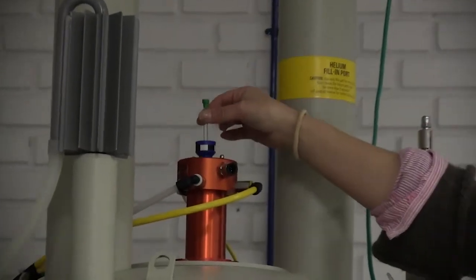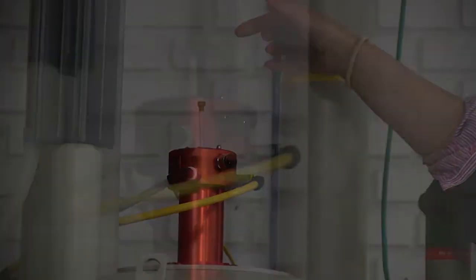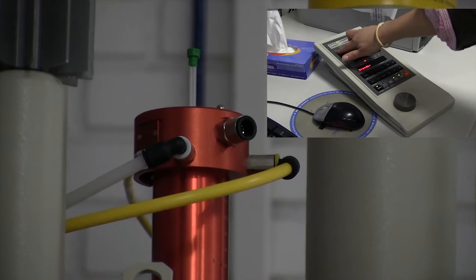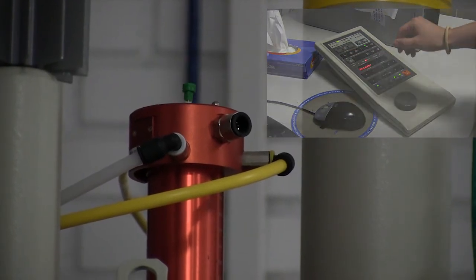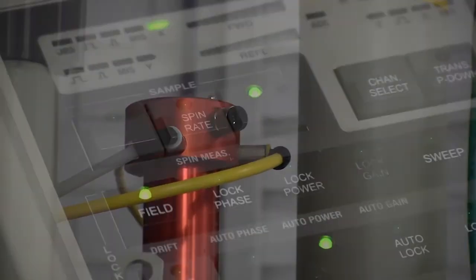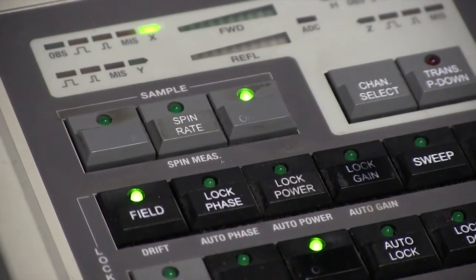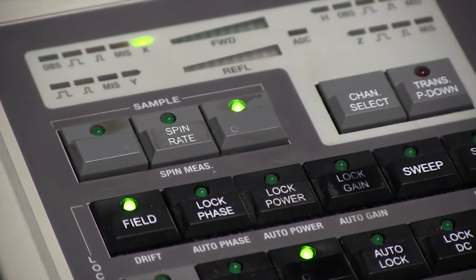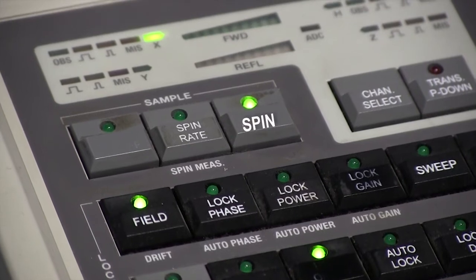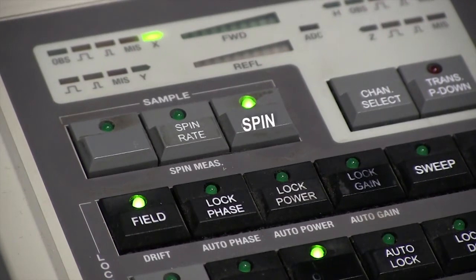The air current maintains the tube floating in the upper part of the magnet. We now turn it off and the tube smoothly but boldly goes all the way down into the probe. The turbine into where the tube was inserted serves as a rotor to spin the sample.